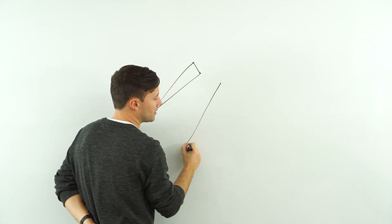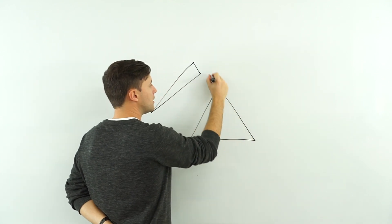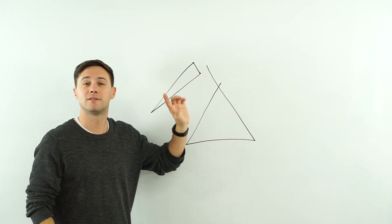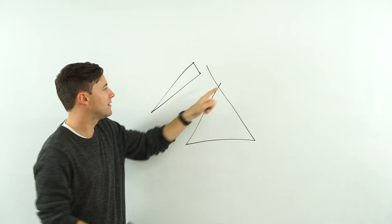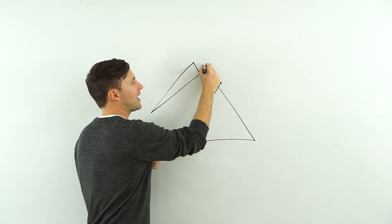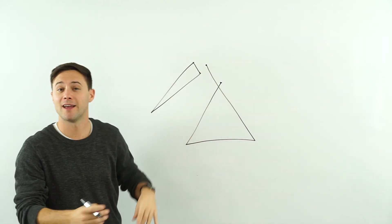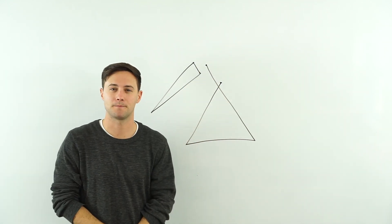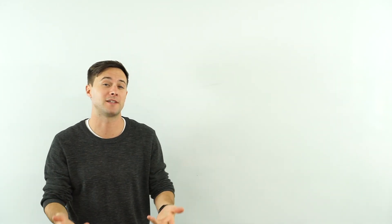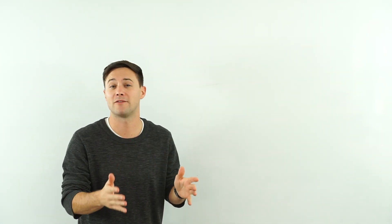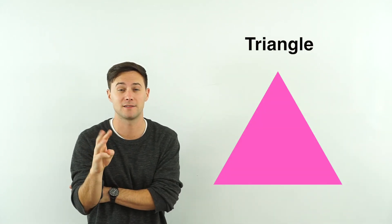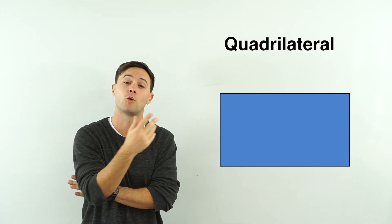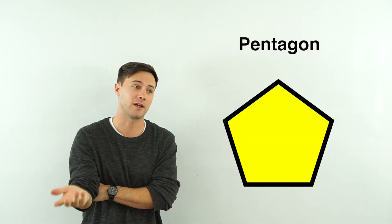So if I did something like this — one, two, three — these do not intersect at their end points. This is an end point, and that is an end point, and they do not intersect at those end points. So that is not a polygon. Now that we remember the basics of polygons, let's talk about the different types. We have polygons with three sides — triangles. We've got polygons with four sides — quadrilaterals. Five sides — pentagons. Six sides — hexagons, and so on.